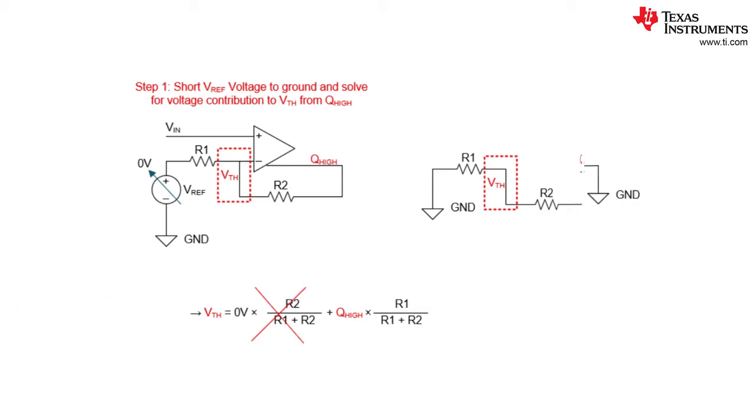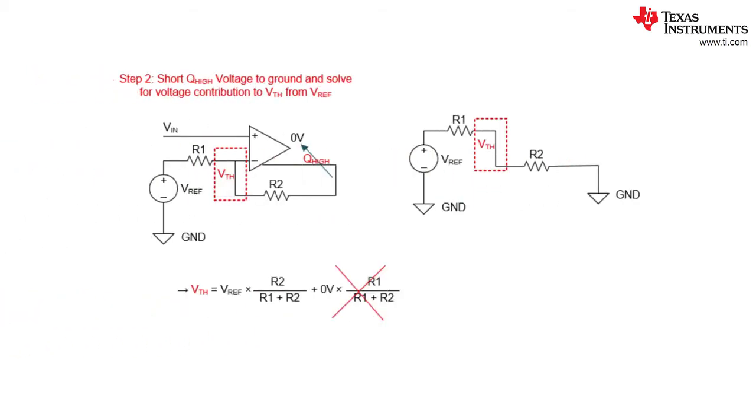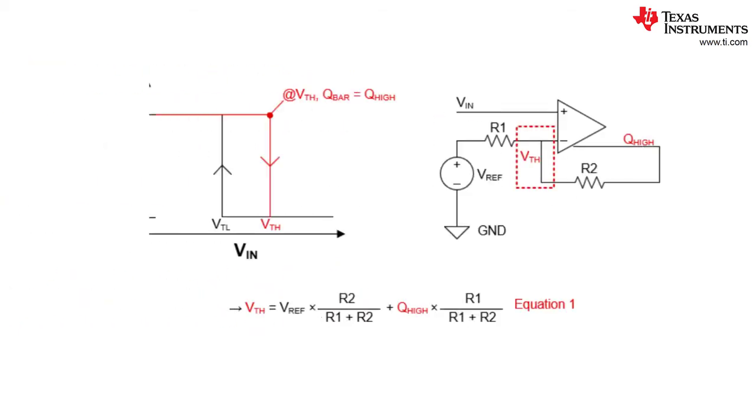As you can see the equation shown below illustrates Q high's contribution to the threshold voltage. Step two in our superposition solution is to short the Q high voltage to ground and solve for the voltage contribution to the threshold voltage from Vref. As you can see the equation shown below illustrates Vref's contribution to the threshold voltage. Now we can combine our two superposition equations to get our result shown in equation one.